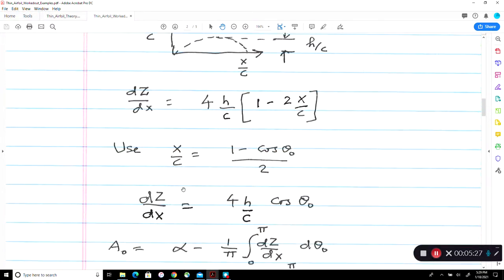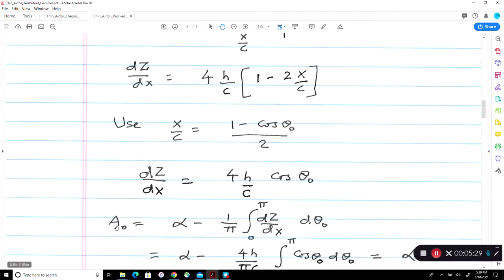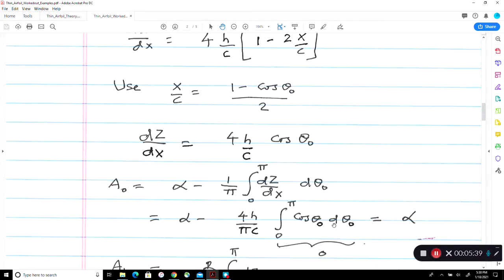So we use a change of variable x over c equal to 1 minus cosine theta naught over 2. So if you plug that in here for x over c, then you get dz over dx equal to 4h over c times cosine of theta naught. So all you have to do is take this expression and plug it into the analytical expression for a naught and an. So plug this into a naught, then you'll get a cosine theta naught d theta naught. When you integrate this, you'll get a sine theta naught. Sine of zero is zero. Sine of pi is zero. So this integral vanishes. So a naught is simply alpha.